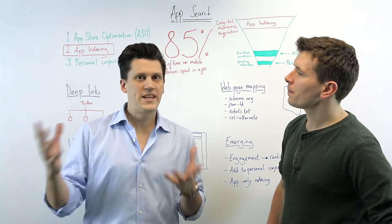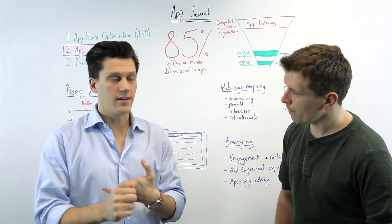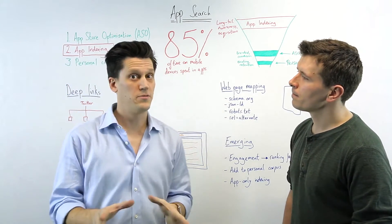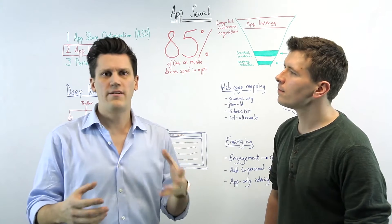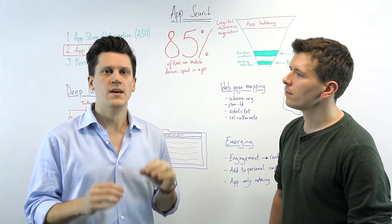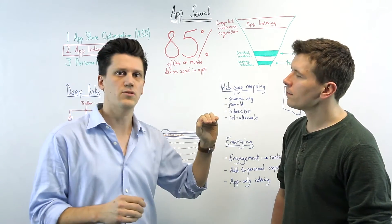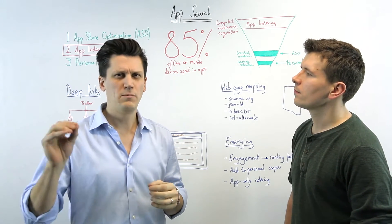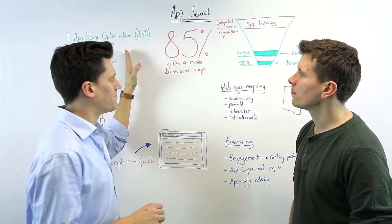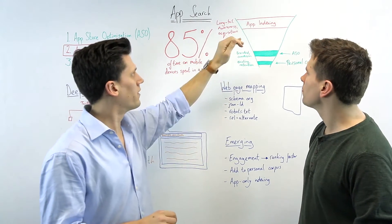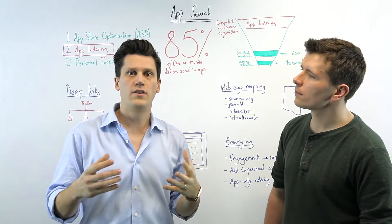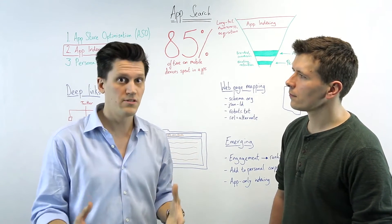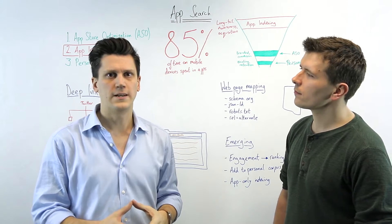When we say app search, we could potentially mean three things. The first is app store optimisation, or ASO, which is not what we're going to be talking about today. It's an important area with its own quirks and intricacies, but it's pretty far down the funnel — most searches in app stores are either branded or high-level category searches. What we want to spend more time on today is app indexing, which is right at the top of the funnel and takes over the opportunities to rank in long-tail search, giving you the opportunity to acquire new users via search — really for the first time in app marketing.